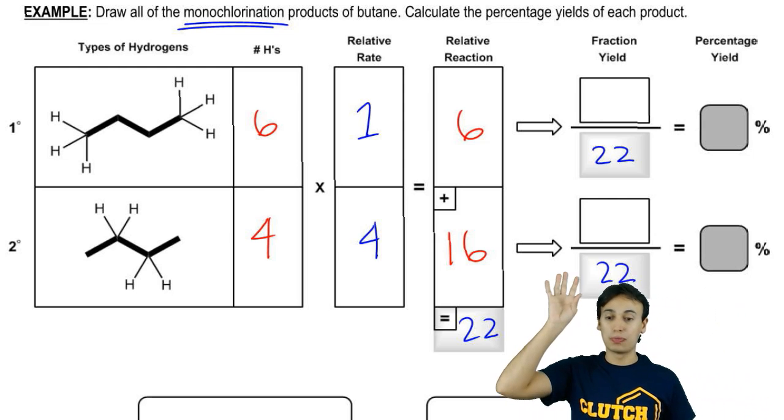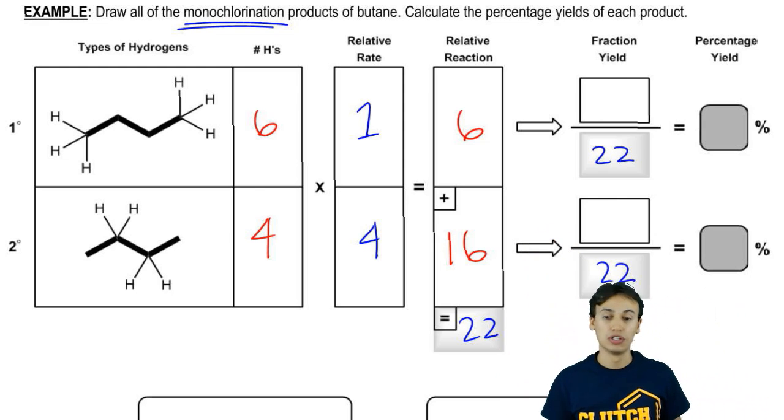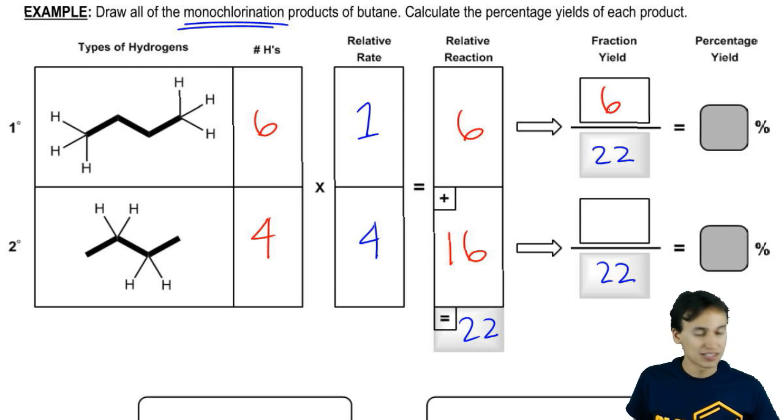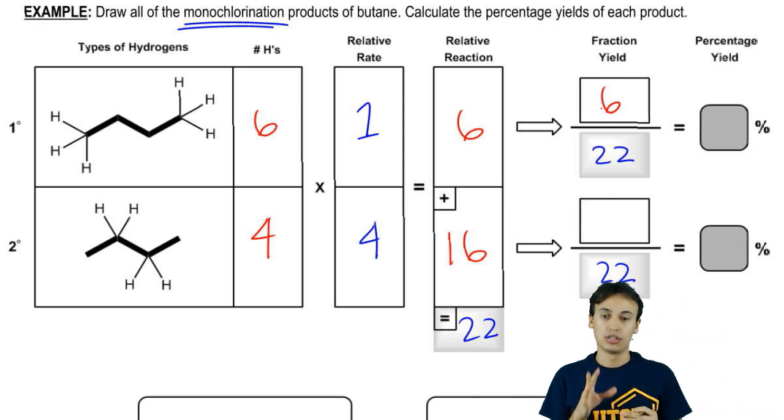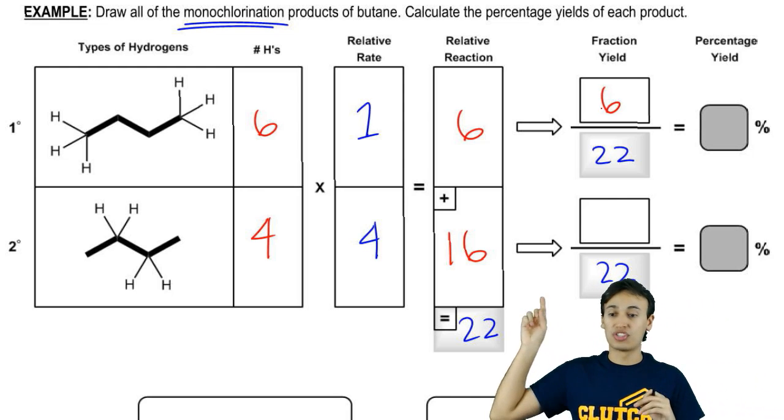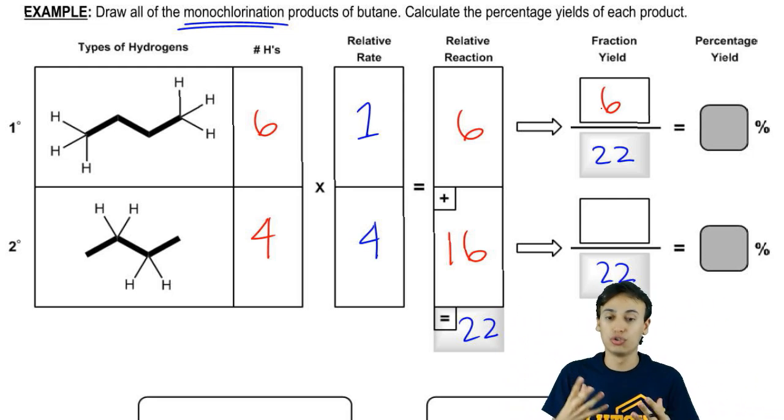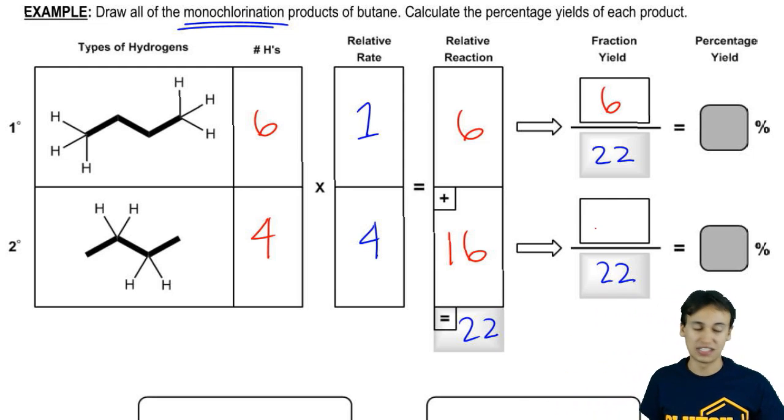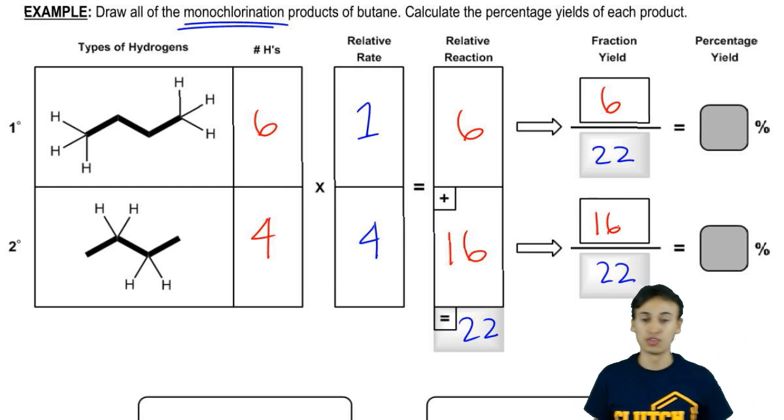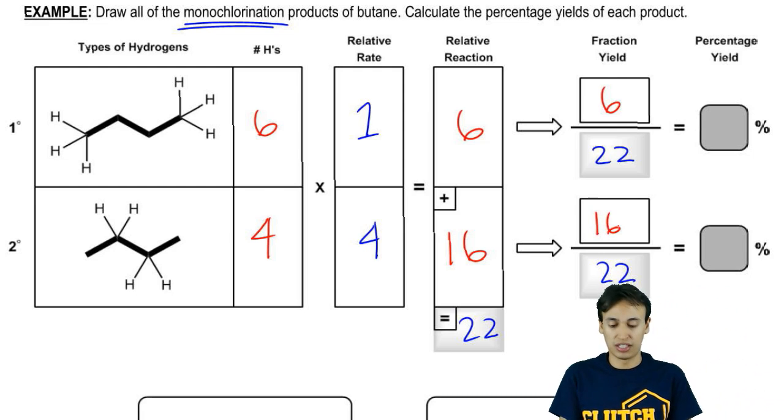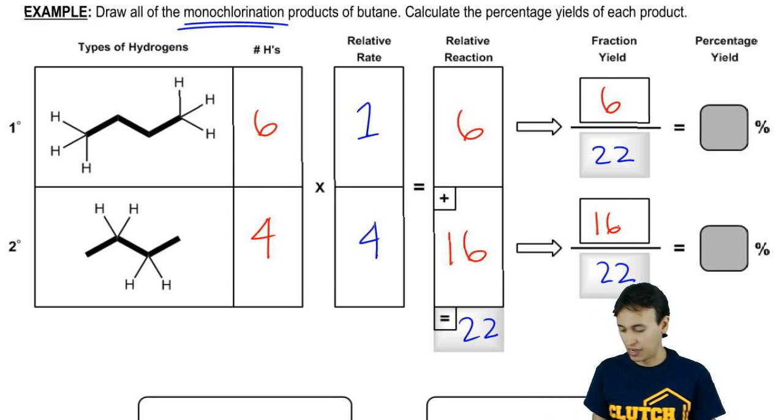And then for the top, I'm just going to put the actual relative amount. So that means that six out of 22 went to the primary. So the fraction yield was six over 22. And the fraction yield of my secondaries was 16 over 22. These ratios came out a little bit too difficult to calculate in our heads, so let's use a calculator.